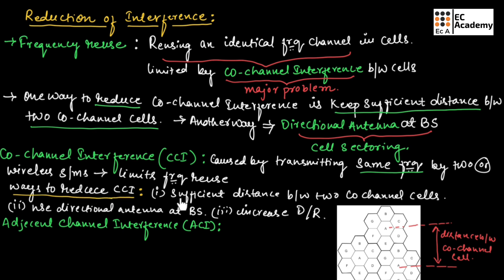The first way to reduce co-channel interference is to maintain sufficient distance between two co-channel cells. As you can see in this diagram, we have two co-channel cells — we have taken A as an example — so we need to maintain sufficient distance between these two co-channels to reduce co-channel interference.